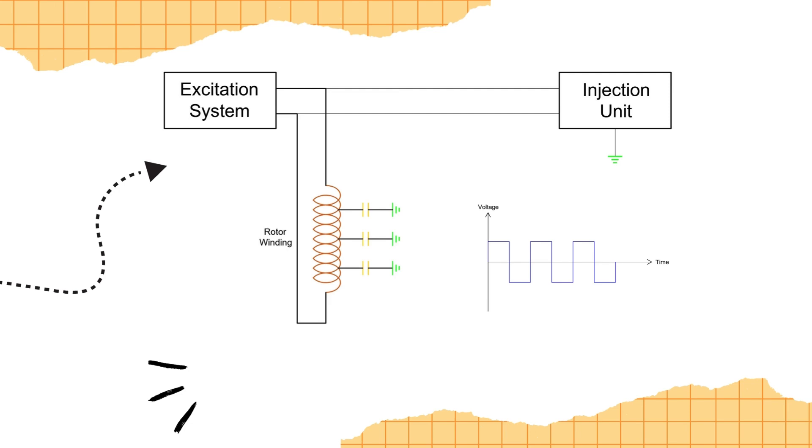The injection unit in this method not only injects the square wave, but also measures the insulation resistance. This valuable data is then transmitted to the generator protection relay, which acts according to the information received.